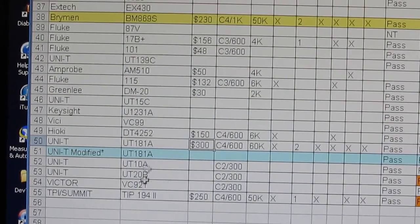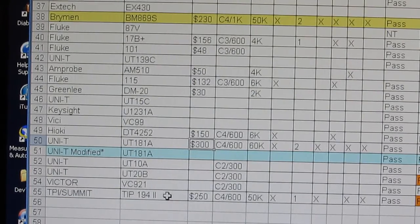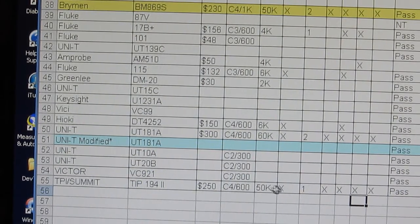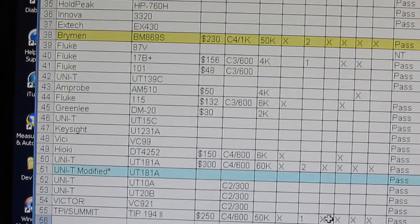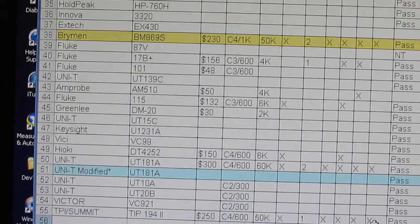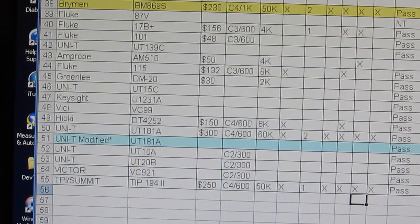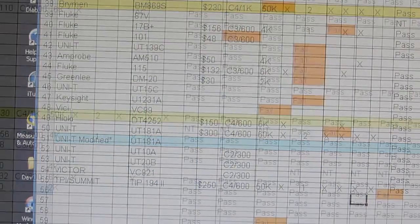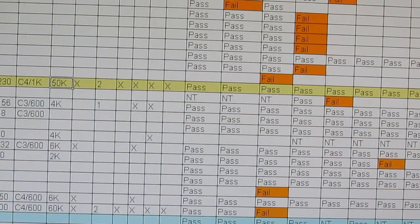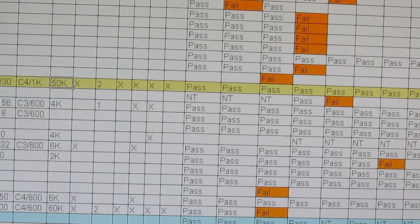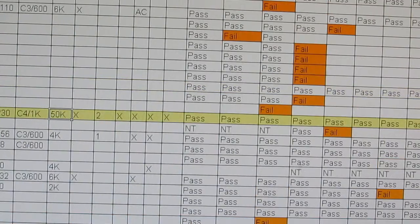This is looking at some of the data I've collected. Down here we can see the TPI Summit meter. You can see it costs roughly $250. It's Cat4 600 volt rated. It has a resolution of 50,000 counts. It supports true RMS. It has a single temperature sensor. It's able to read conductance as well as millivolts and microamps, and it also has an AC plus DC mode. It passed the high voltage DC and AC test, but then when I ran the rectified AC 220 volt test, it failed. Besides the TPI, some of the other meters that have failed this test are the Unity UT20B, this was a small pocket meter, and also the TechPower TP2844R.